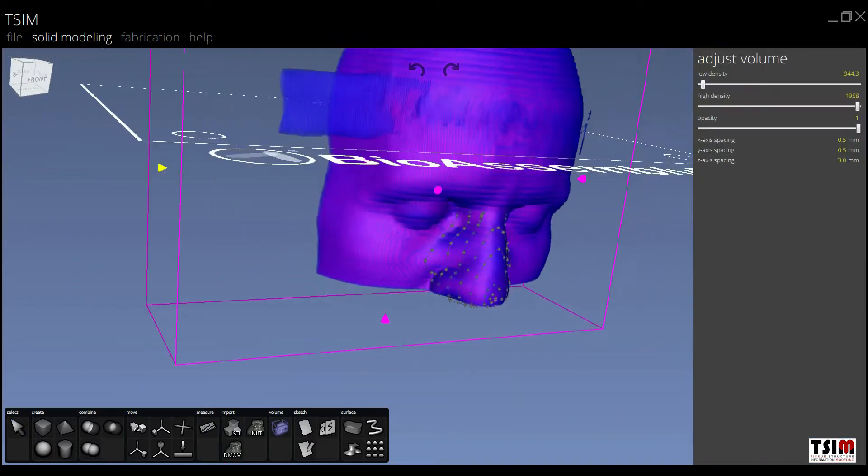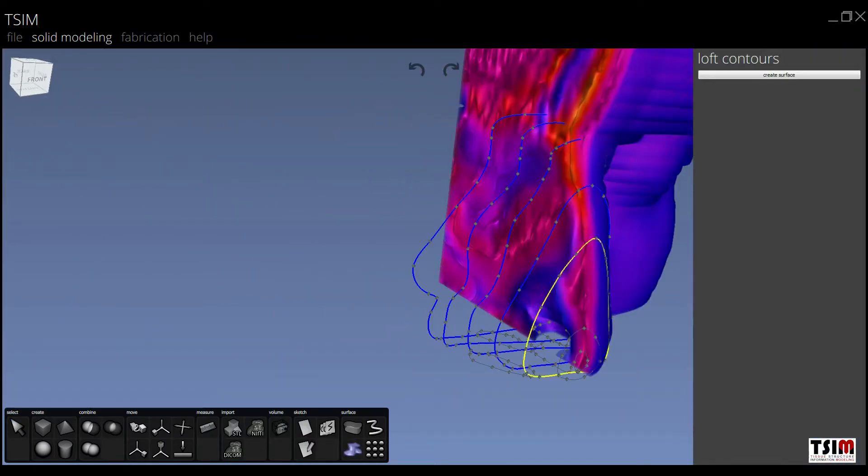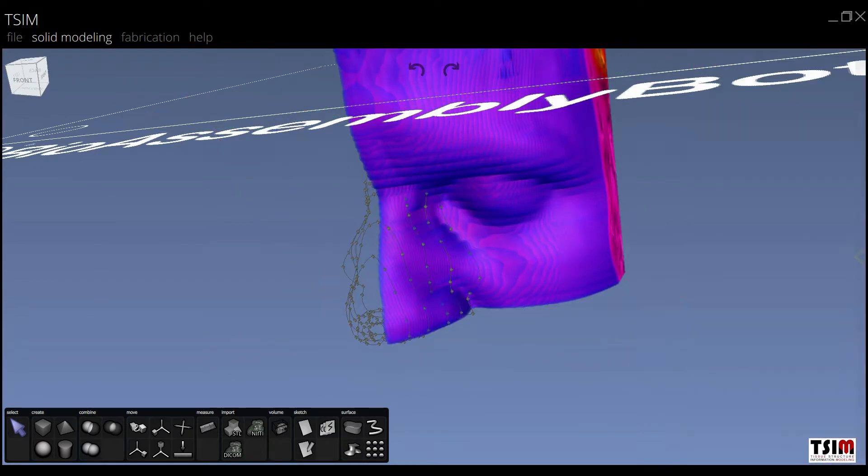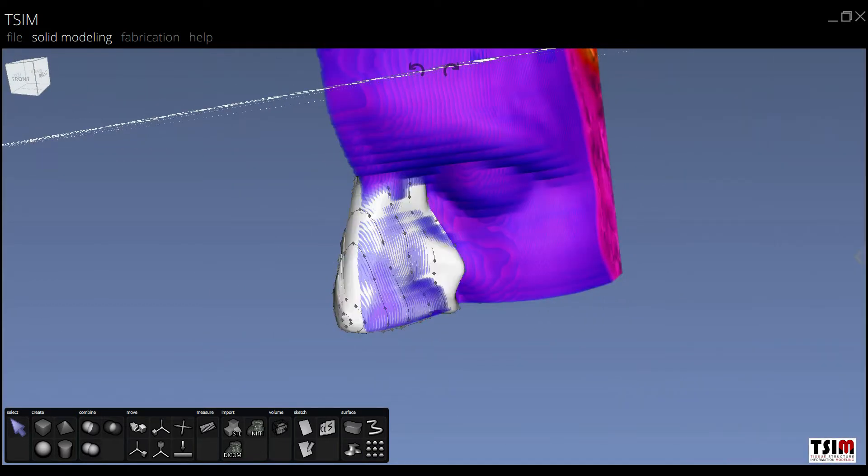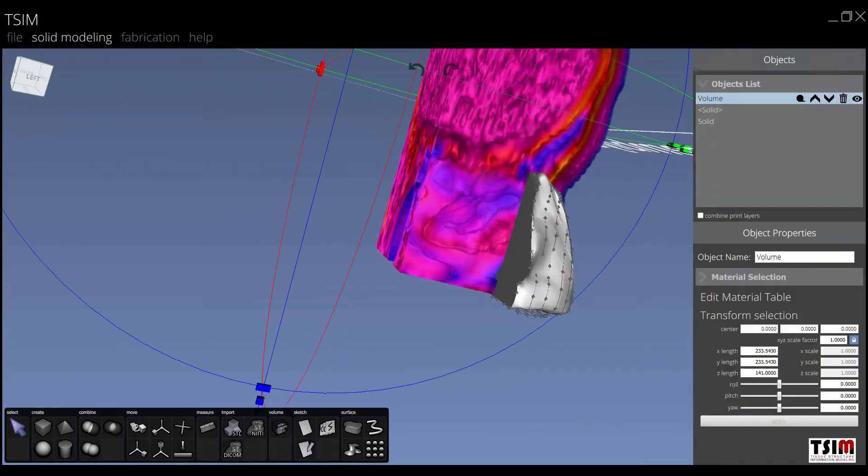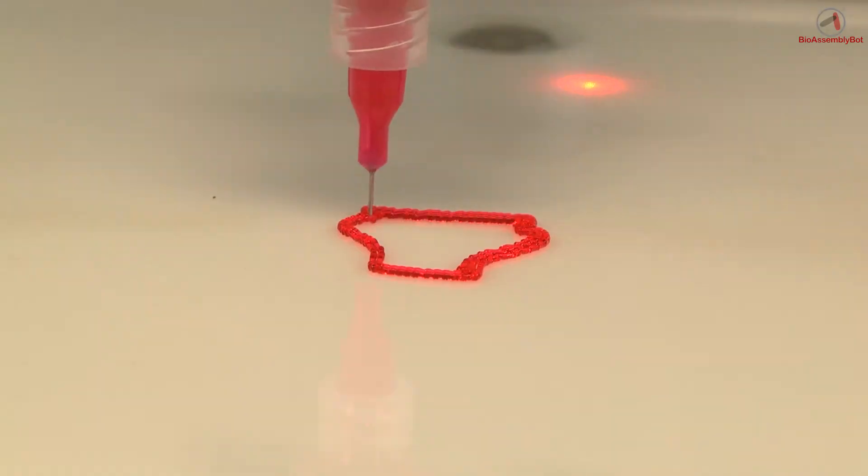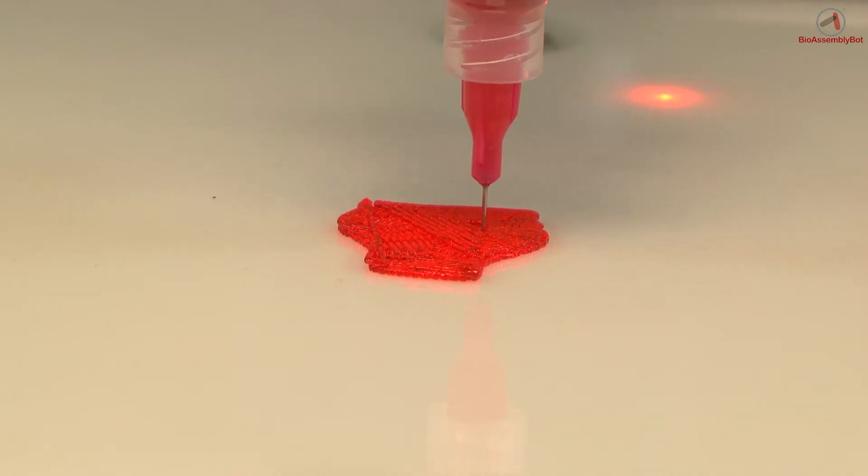In this particular example, we're going to print up a model of a patient's nose derived from an image of that patient's face. We've extracted the nose from the image within the computer 3D model space of TSIM, and this will help guide the printing of the model using a hydrogel.